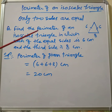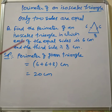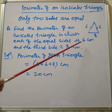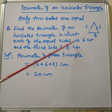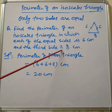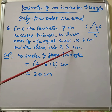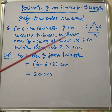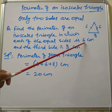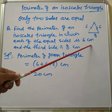The question is: find the perimeter of an isosceles triangle in which each of the equal sides is six centimeters and the third side is eight centimeters. Each of the equal sides means one side is six and the other is also six.